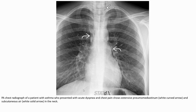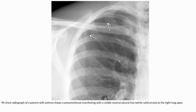Another PA chest radiograph of a patient with asthma who presented with acute dyspnea and chest pain shows extensive pneumomediastinum with subcutaneous air in the neck. Another chest radiograph of a patient with asthma shows a clear pneumothorax manifestation with a visible pleural line at the level of the hilum.